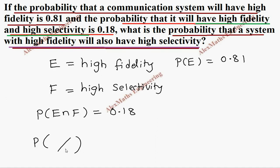What we already know is the system with high fidelity, which is E. So what they are asking is what is the probability that a system with high fidelity will also have high selectivity. That will come in the numerator part. Now as per the formula, it is P of F intersection E divided by P of E.